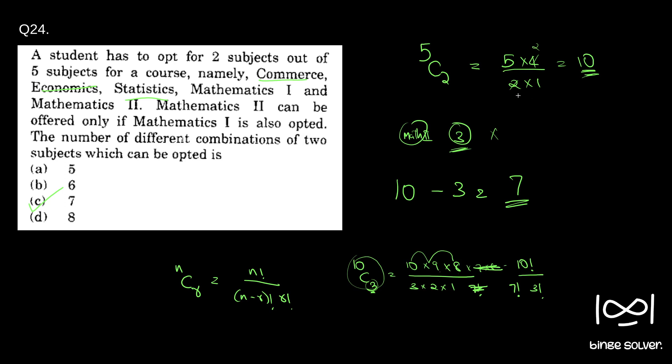Anyone who has learned combinations and permutations will find this easy, but people not familiar with these concepts will find this difficult. That's why I explained in the last question how the nCr formula works. If you want me to do a video on combinations and permutations, do comment and I'll try to make it. The solution to question 24 is C: 7.